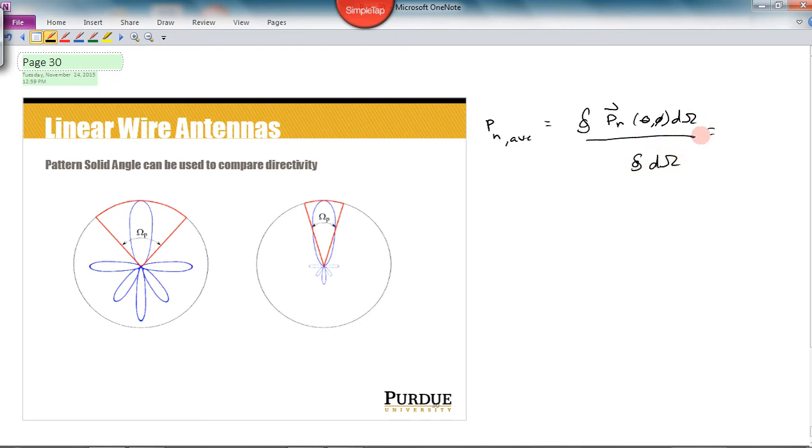And I'm not going to do the math for you here. I'm just going to kind of set it up. We've done a lot of math, and I think we're all kind of tired of it. So we'll try to keep this lecture as math-light as possible. So the result of this fraction here is that it's just the pattern solid angle for the antenna divided by 4 pi.